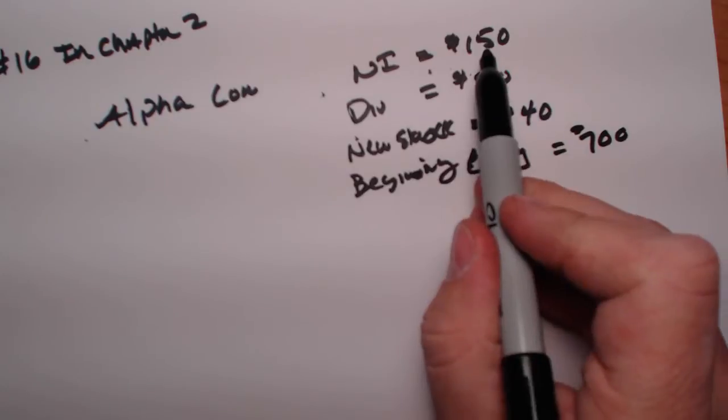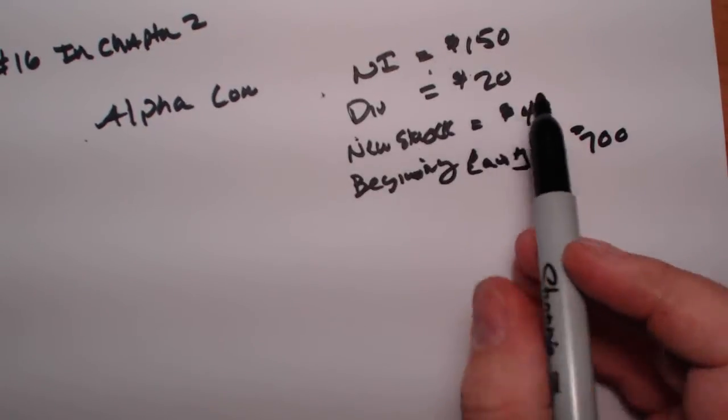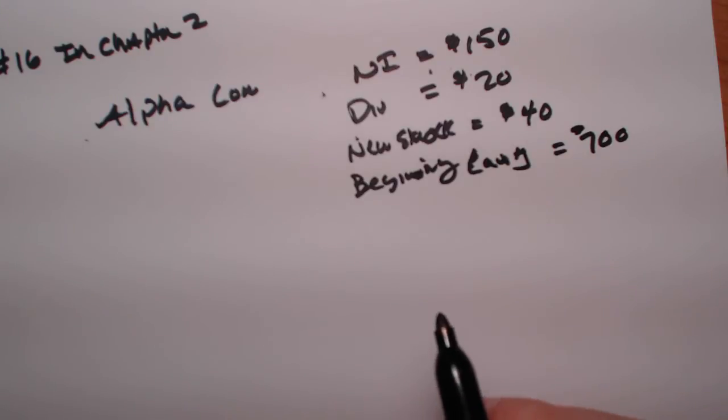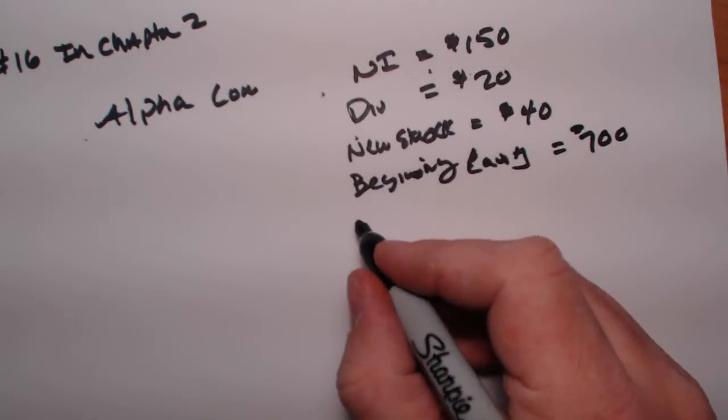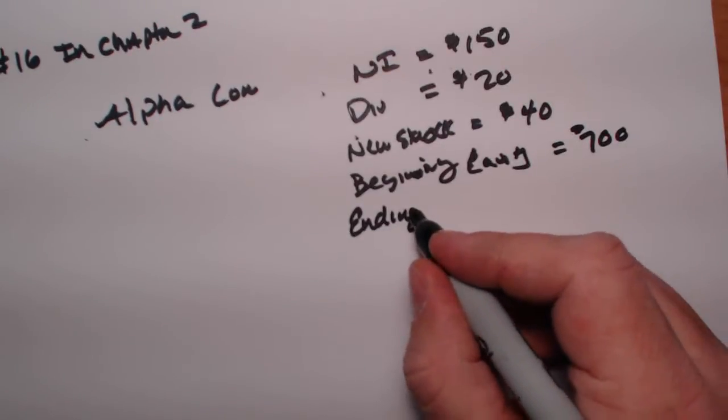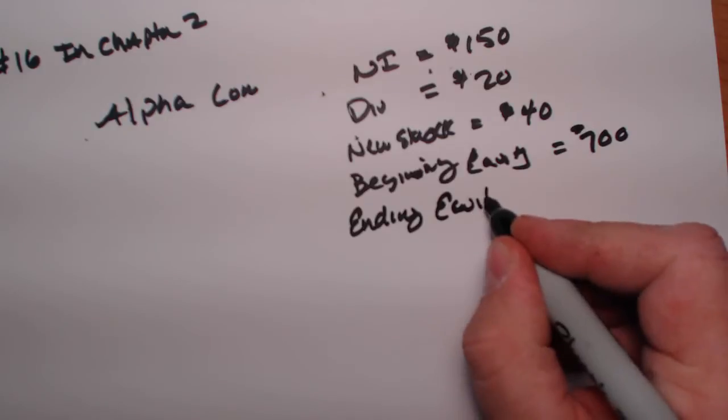So we had a net income of $150 for the year, paid out $20 in dividends to our investors, issued new stock at $40, and we had beginning equity when we started. The question in this problem is, what is the ending equity for the year?